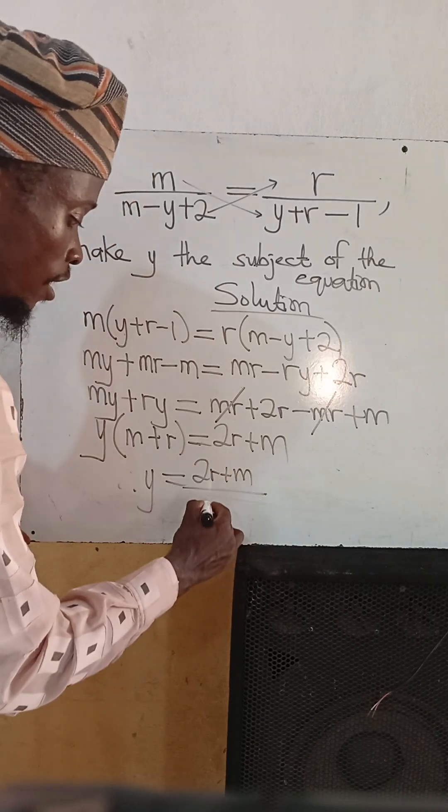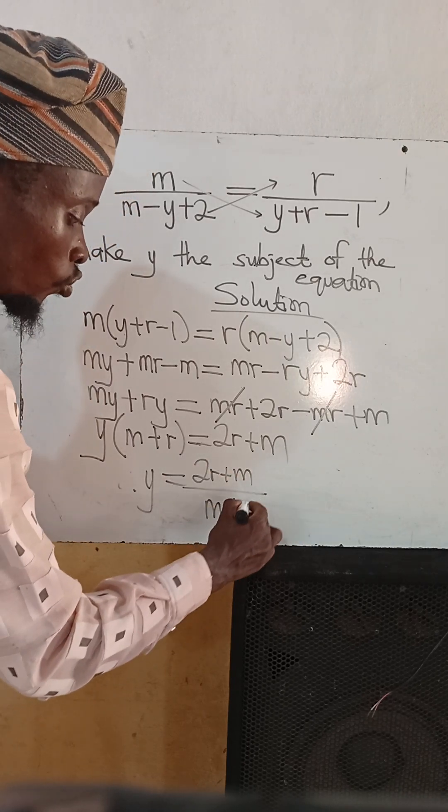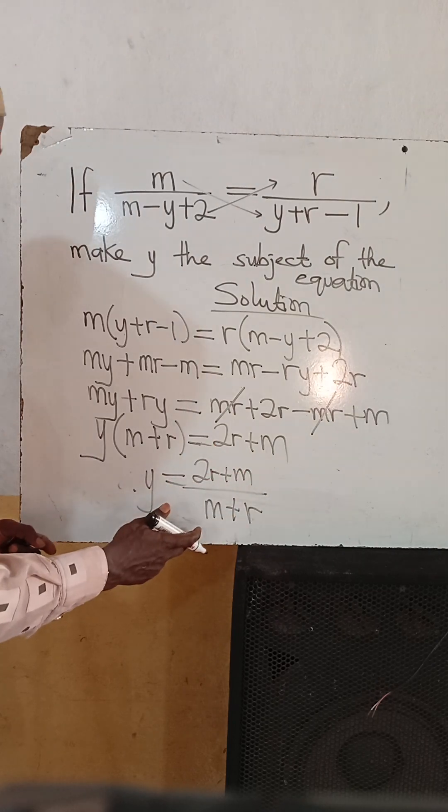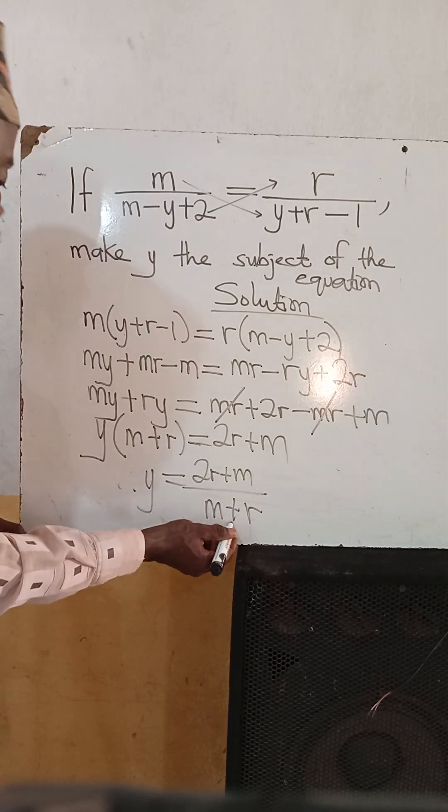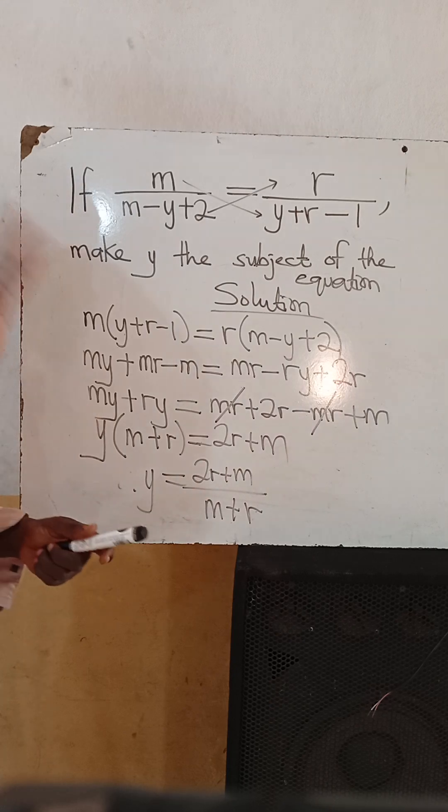This is 2r plus m divided by m plus r. They can never cancel each other like this. You can't cancel them because you have plus in between them.